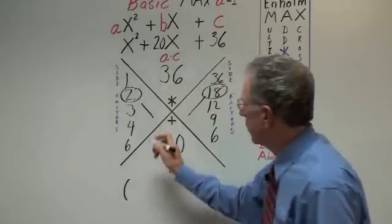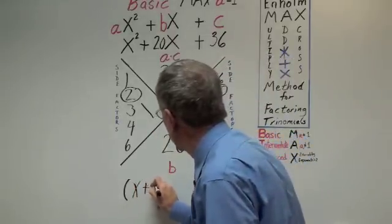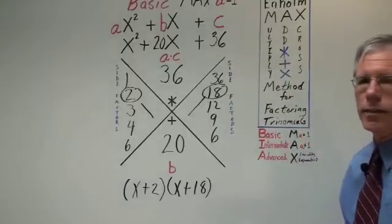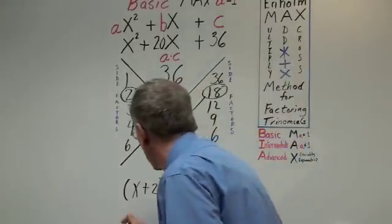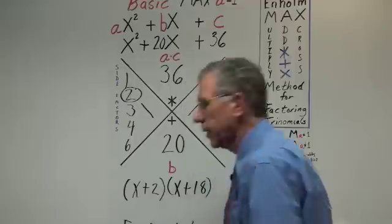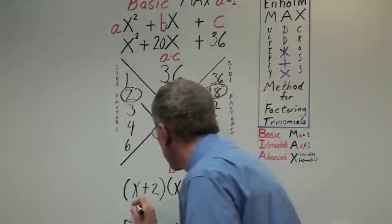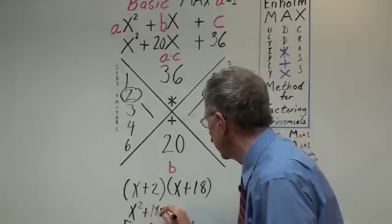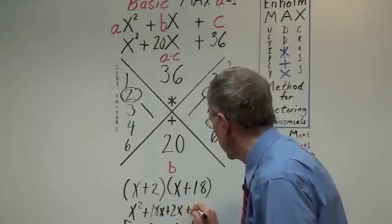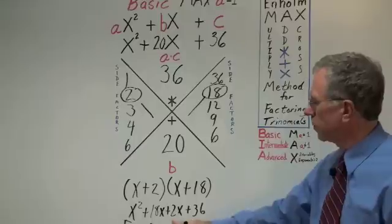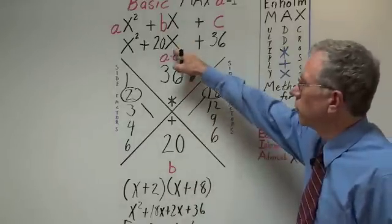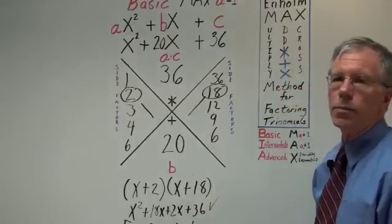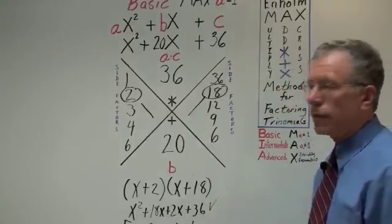Here we get x plus 2 times x plus 18. Again, let's check to see if that's correct. Foil. Get lots of practice with foil using max. x squared, 18x, 2x, and 36. Well 18x plus 2 is very clearly 20x. So we've proved, once again, max has produced the correct factors.